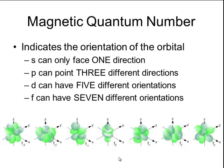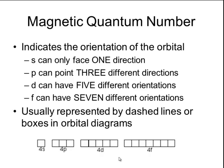And finally, an f-sublevel can actually have seven different orientations. Now usually, we represent these orientations by dashed lines or boxes in orbital diagrams. So remember that s can only have one direction. So we would just use one box or one line. p's can point three different directions. So they will have three boxes or three lines. d's have five different orientations. And f's have seven different orientations.